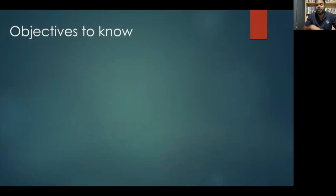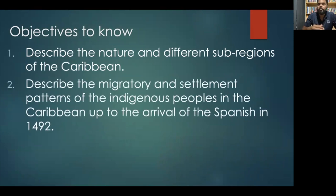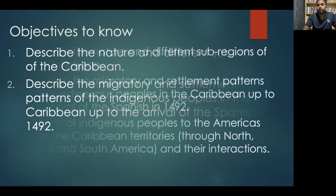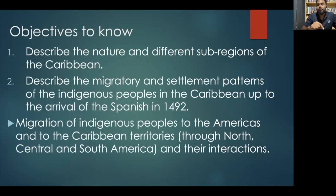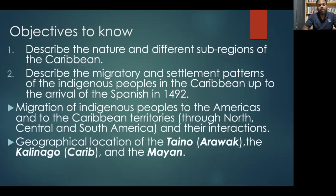For our lesson today, these are the objectives we want to cover. First, we should be able to describe the nature and the different sub-regions of the Caribbean. Then we want to describe the migratory and settlement patterns of the Indigenous peoples up to the arrival of the Spanish in 1492, including their journey through North, Central, and South America, and their interactions. Finally, we want to identify the geographic location of three people groups: the Taino, the Calinago, and the Mayan.